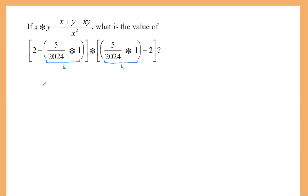So I'm going to use 2 minus K. That is our X value in the star operation, and then K minus 2 is our Y value. This is way better than dealing with bad fractions. So with X as 2 minus K and Y as K minus 2, we replace these into the given expression: we get 2 minus K plus K minus 2.